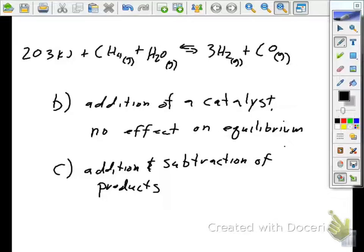If I add more CO, what happens initially to the Q? It's greater. So, to get back at equilibrium, it's going to shift left. Does that make sense?